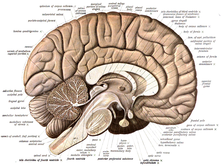Neuroanatomy is the study of the structure and organization of the nervous system. In contrast to animals with radial symmetry, whose nervous system consists of a distributed network of cells, animals with bilateral symmetry have segregated, defined nervous systems.